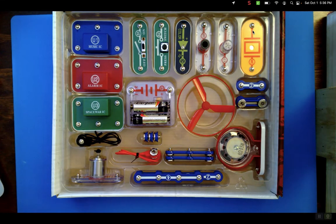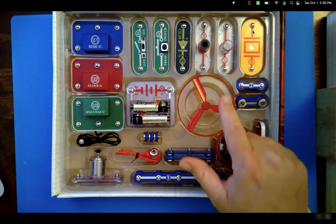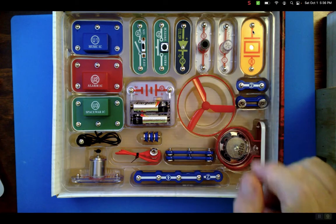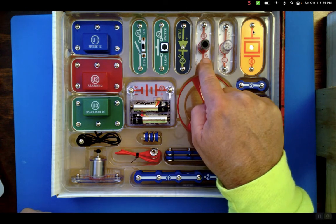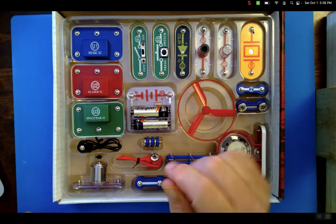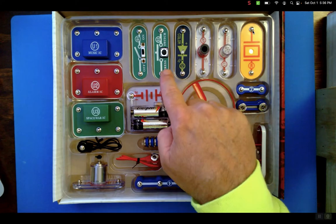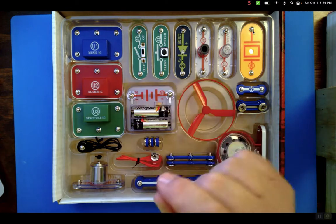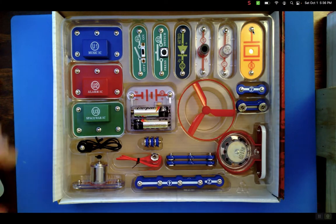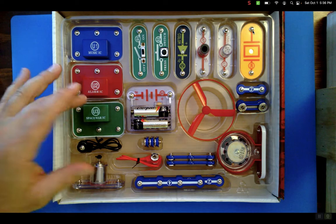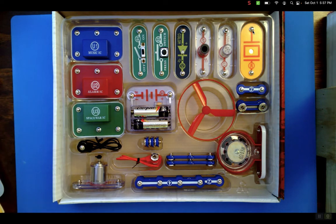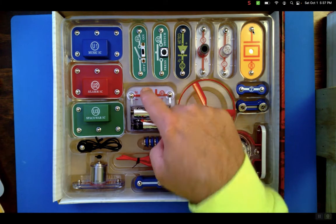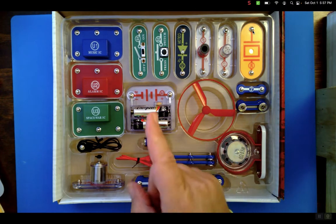This is their whistle thing, a photoresistor, and LED. It's a color-changing LED. Push button, press switch, slide on-off switch. Their integrated circuit boxes: music, alarm, and space. Space works kind of like music except it's designed to make spacey sounds. The battery holder, which I've already put two batteries in. It does not come with batteries. Nothing ever comes with batteries.